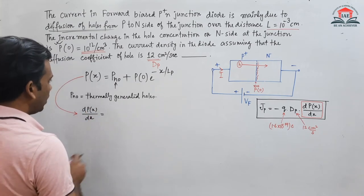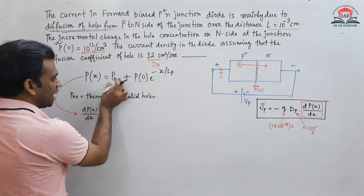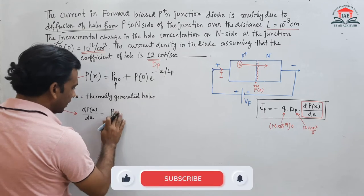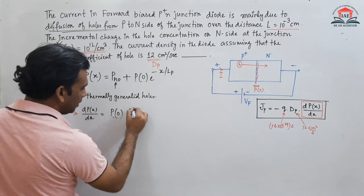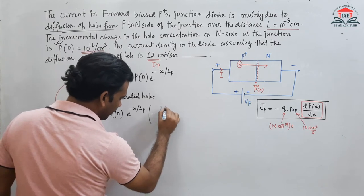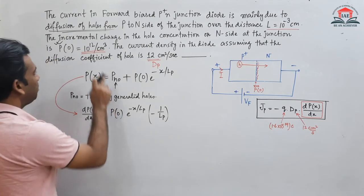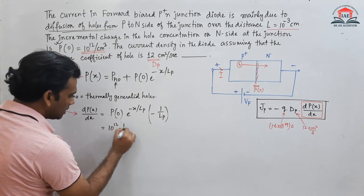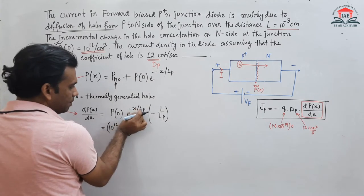Pn0 is a constant so its derivative is 0. Differentiating the second term gives: dP/dx = P0 · e^(-x/Lp) · (−1/Lp). The value of P0 is 10^12 per cm³, and Lp — the diffusion length of the holes — is given as 10^-3 centimeter.